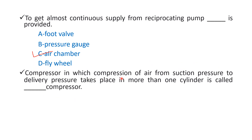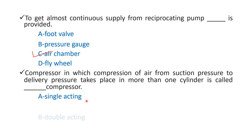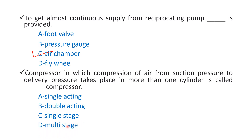Next question: a compressor in which compression of air from suction pressure to delivery pressure takes place in more than one cylinder is called blank compressor. Option A: single acting, Option B: double acting, Option C: single stage, Option D: multi-stage. The right answer is Option D — multi-stage.